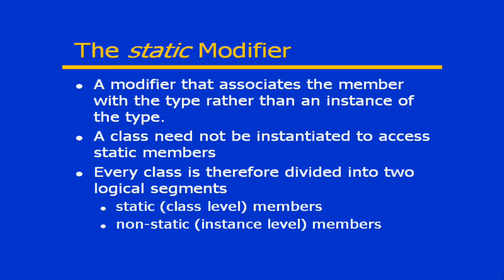The static keyword is basically a modifier that we use to associate a member with the type rather than an instance of the type. So in other words, if we use the static keyword, that means that you don't have to instantiate the class in order to access that static member.